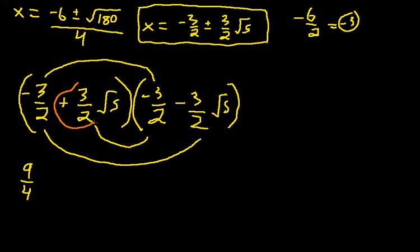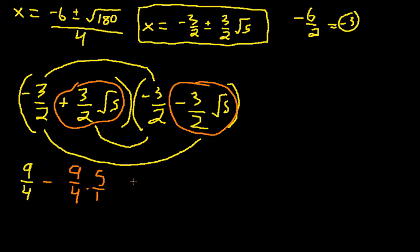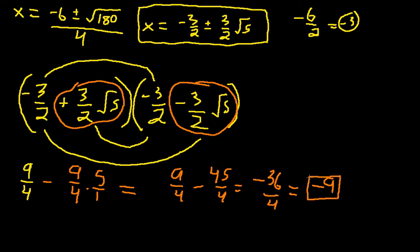And then the last term, and I'll do it in a different color here, the plus 3 halves square root 5 and the minus 3 halves square root 5, multiply to give us minus 9 over 4 times square root 5 times square root 5 is 5 over 1. Okay, and this is equal to 9 over 4 minus 45 over 4. This is exactly negative 36 over 4, which, lo and behold, is negative 9. Okay, so the sum of the roots up here is negative 3. The product of the roots over here is negative 9, and that's the desired answer.